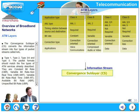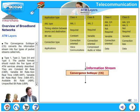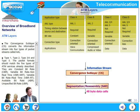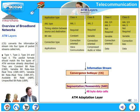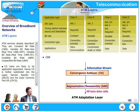The convergence sublayer CS converts an information stream into four types of packet streams called AAL types: type 1, type 2, type 3/4, and type 5. The packet formats should match the five types of ATM services: constant bitrate CBR, variable bitrate non-real-time VBR-NRT, variable bitrate real-time VBR-RT, available bitrate ABR, and unspecified bitrate UBR. We have seen them briefly earlier on.